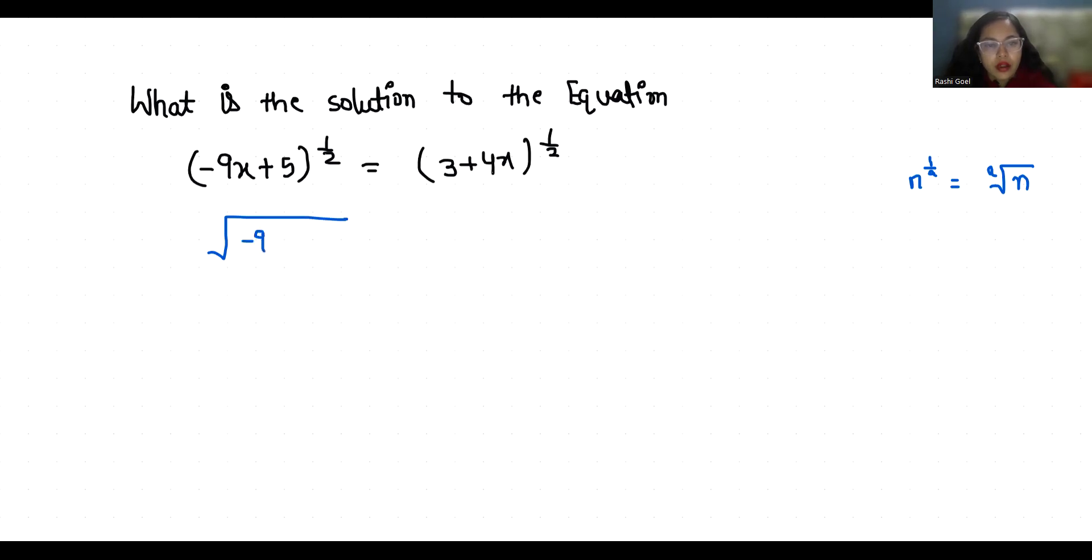This equals square root of (3+4x). Now I am going to square both sides. When we square both sides, the square roots cancel, so -9x+5 = 3+4x.